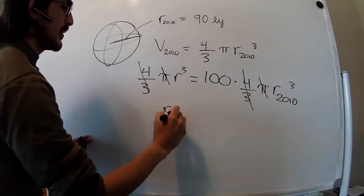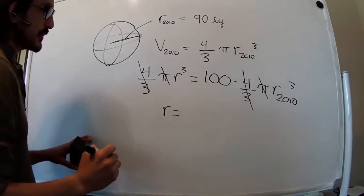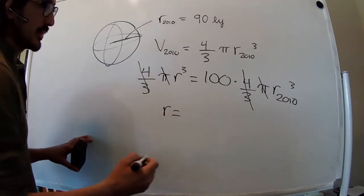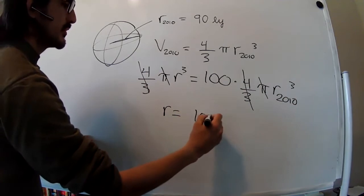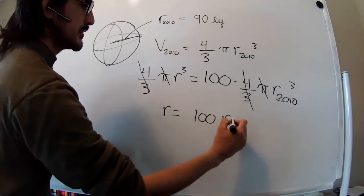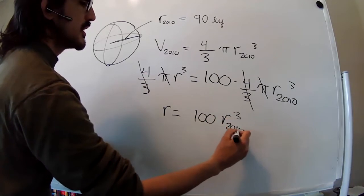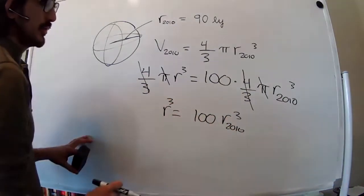The radius that we're looking for is 100 times the radius cubed in 2010. And over here will be a cubed.